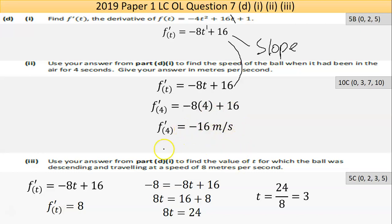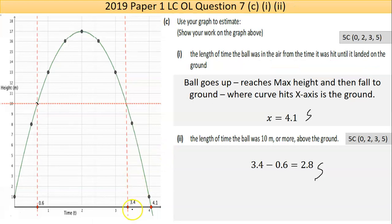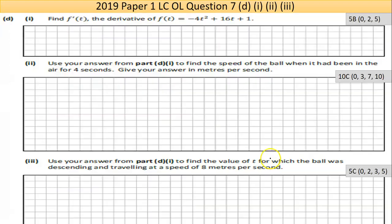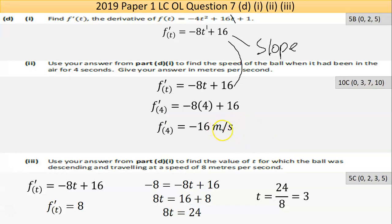Which might seem weird. But if you went back to the graph, four seconds, it's on the way down. So positive going up, zero, negative coming back down. So it's negative 16. And we were told the units were metres per second.